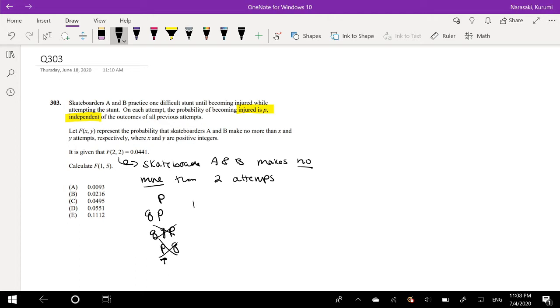So the probability for just one person, like skateboarder A, is going to be P plus QP. And we also know that Q is just a complement of P, so that's equal to P plus 1 minus P times P, also equal to P plus P minus P squared, equals 2P minus P squared.